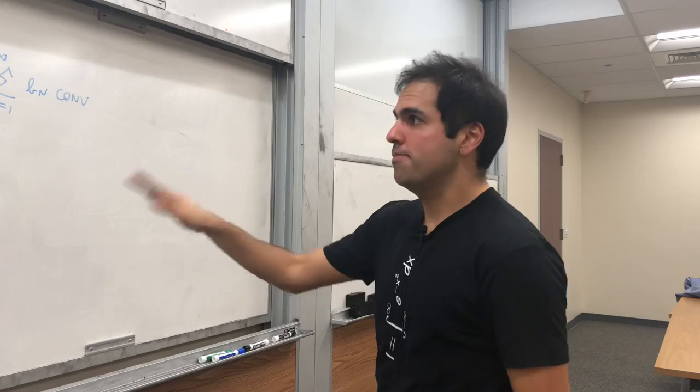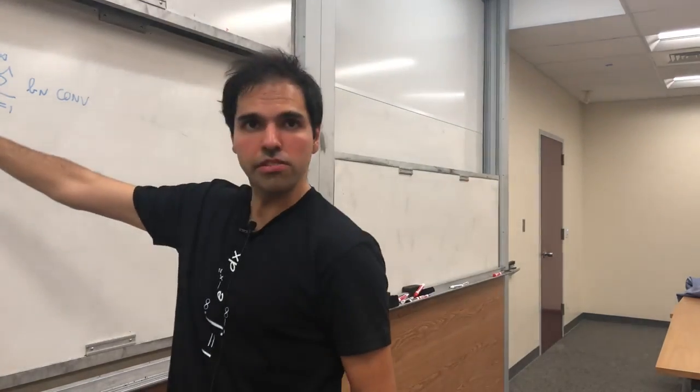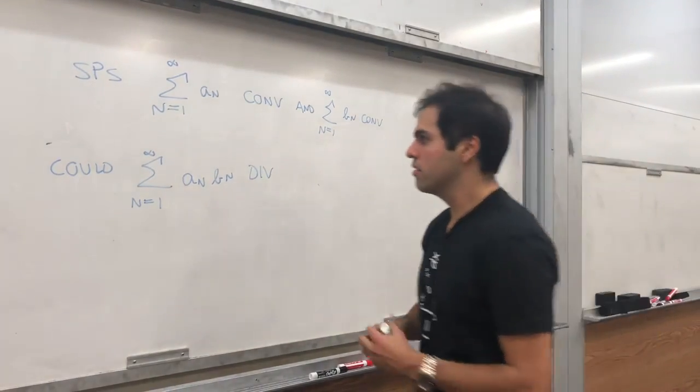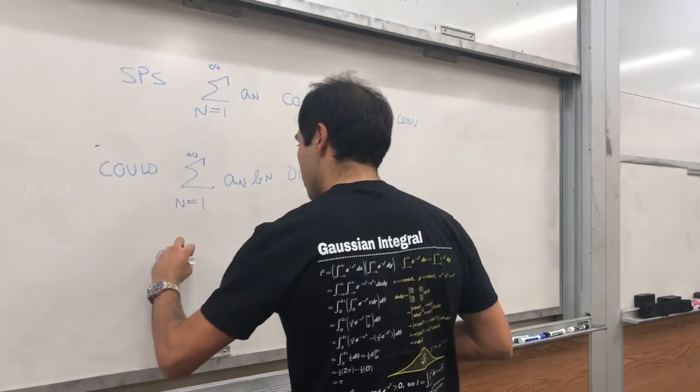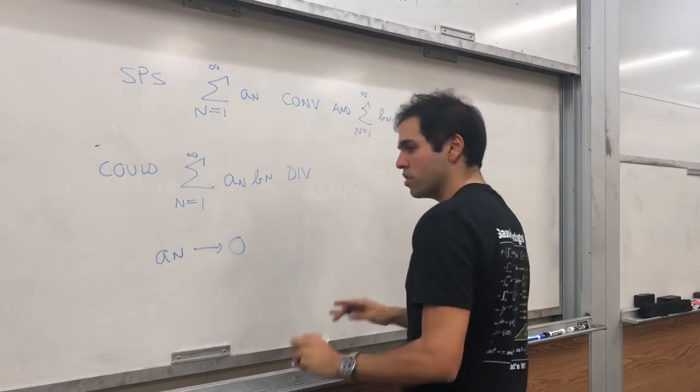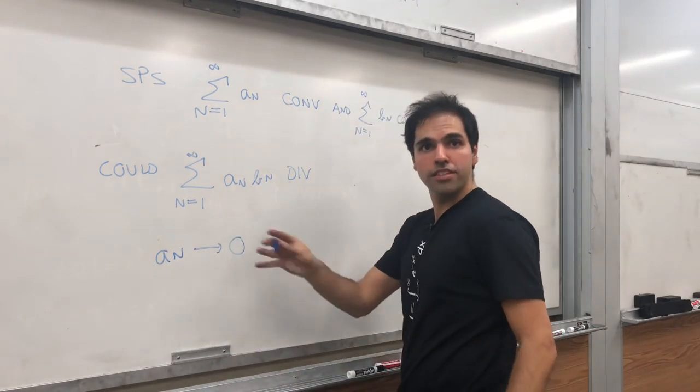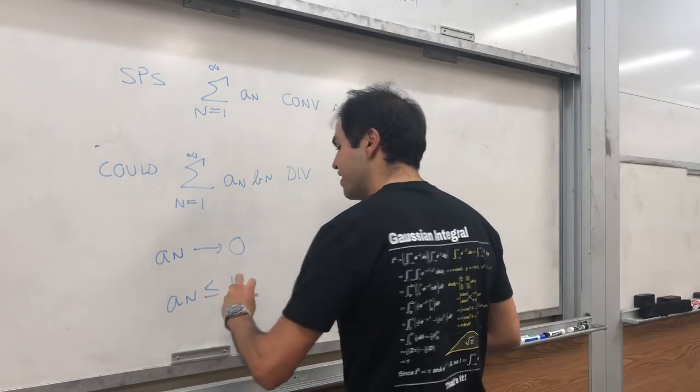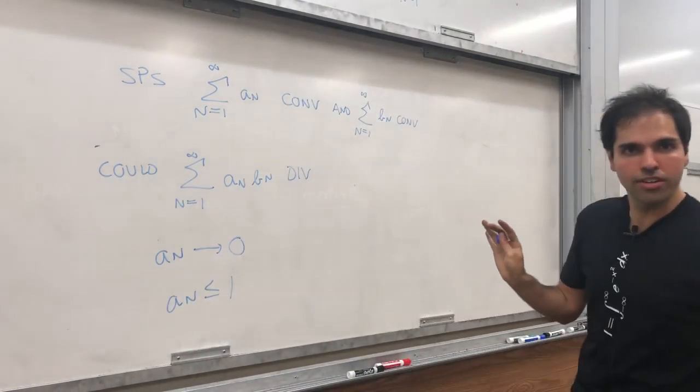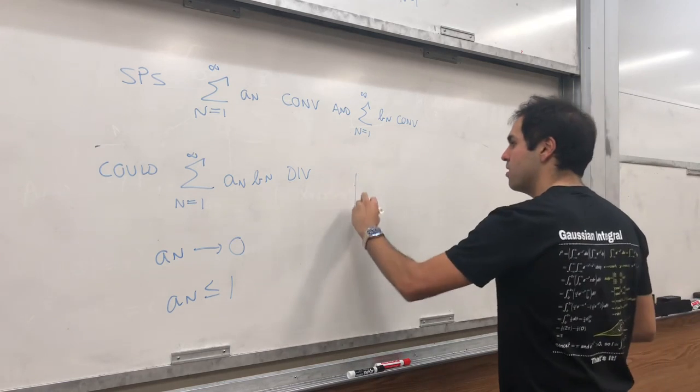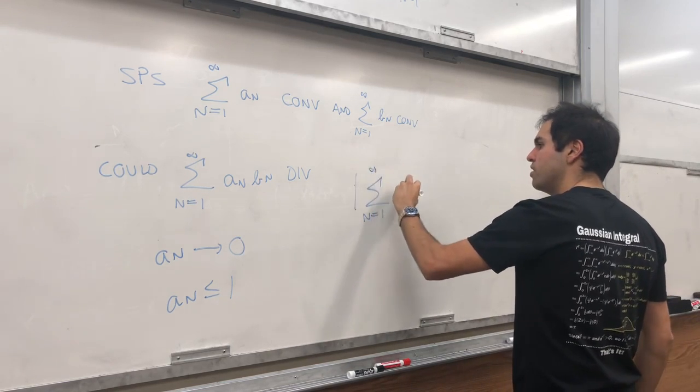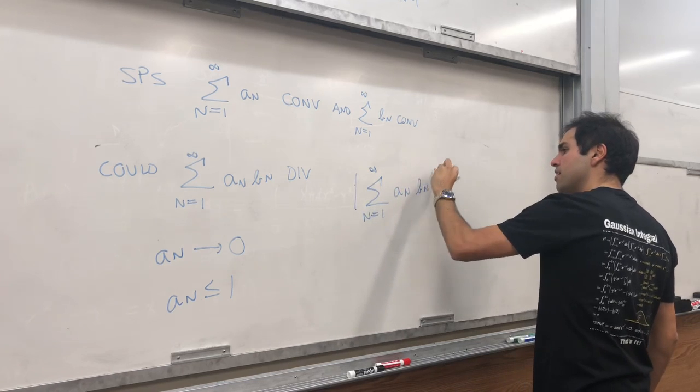Because look, if the series converges, we know that a_n has to go to zero. Right? Has to go to zero. So, eventually, it's less than one. And without loss of generality, let's assume it's always less than one. Then, well, let's see, the sum from one to infinity of a_n b_n.